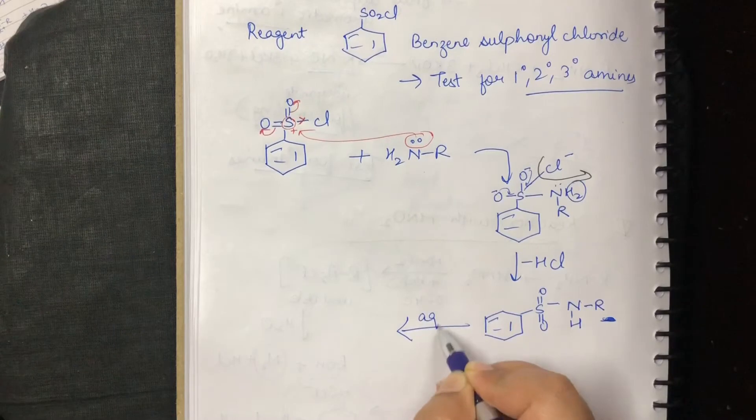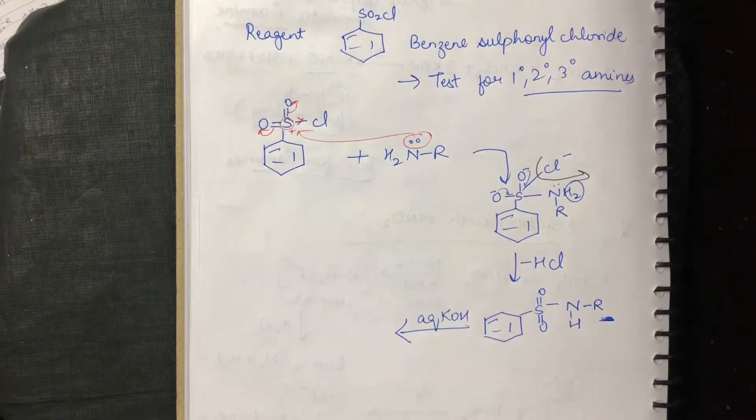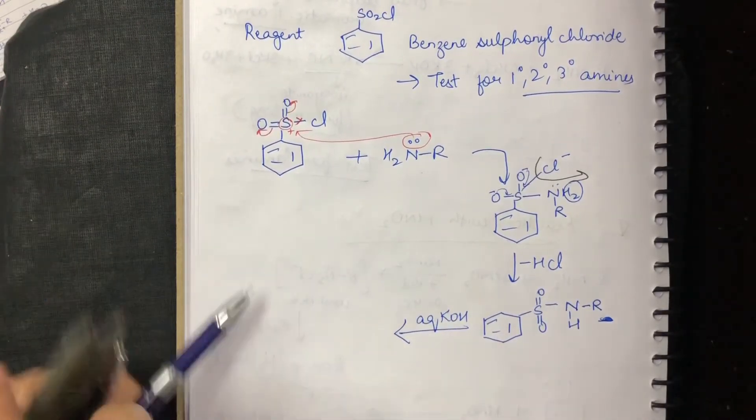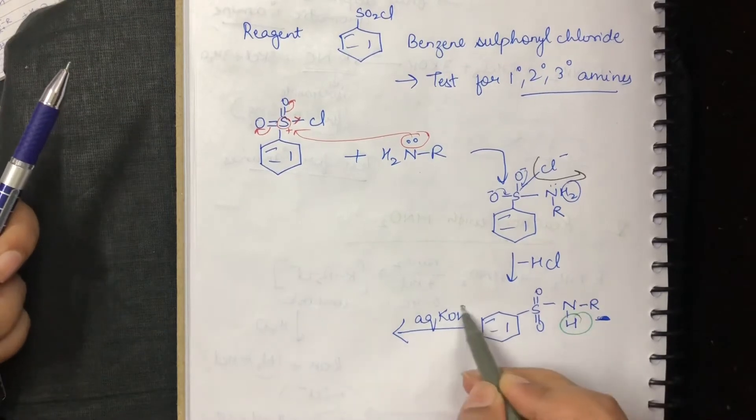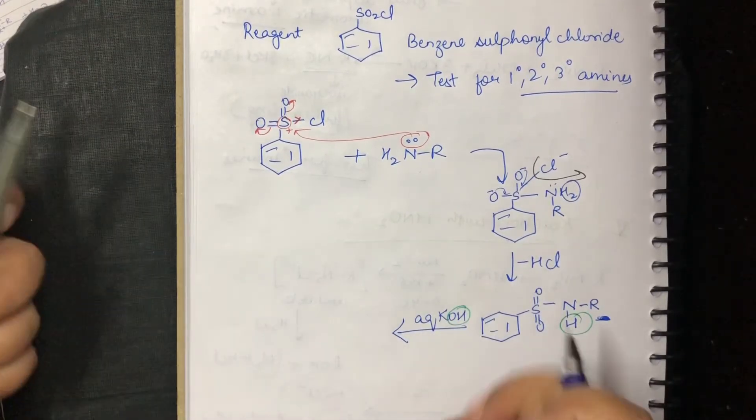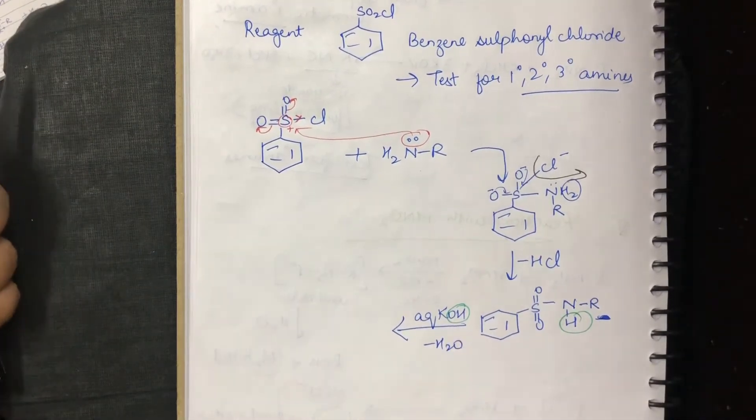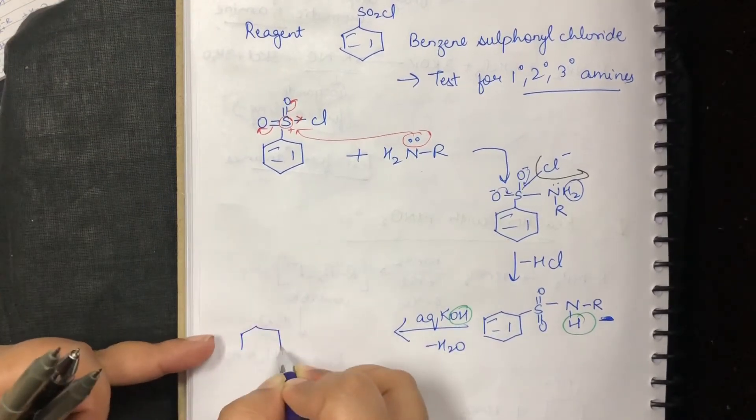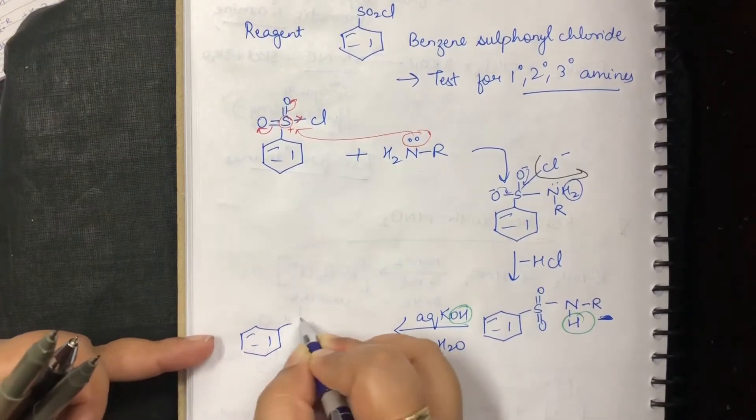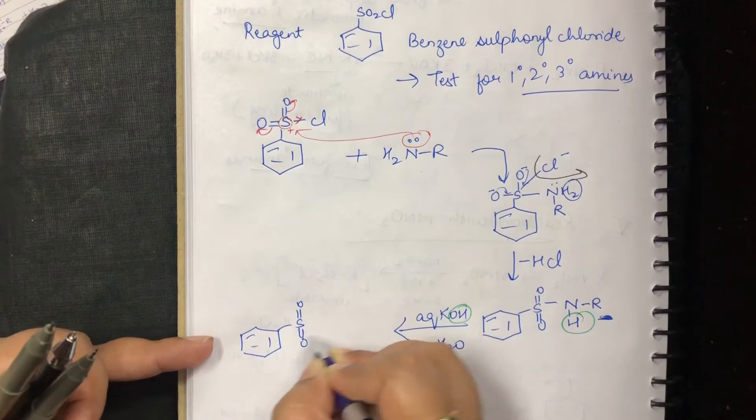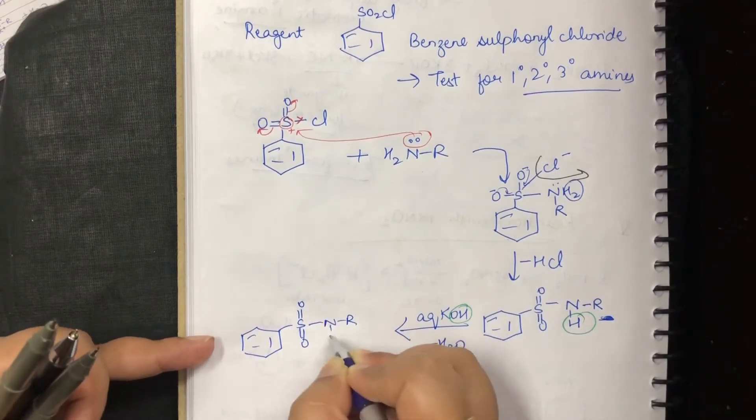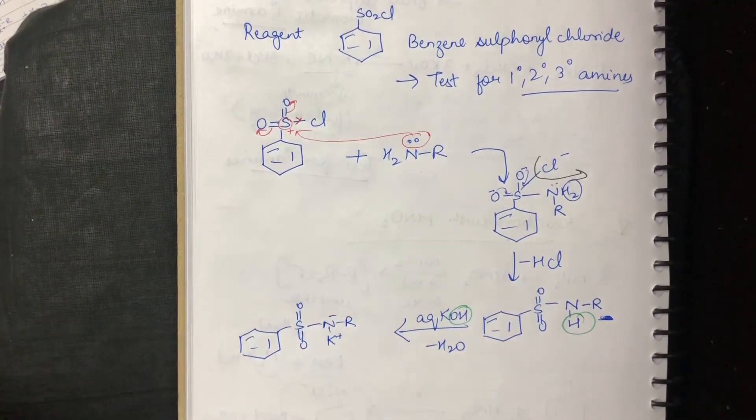Now, when I add aqueous KOH to this reaction, what will happen? This H and this OH will form water and this reaction will proceed with the elimination of water. So, now what will I have is I will have this sulfur double bond here, double bond N, R and K plus, N minus K plus.